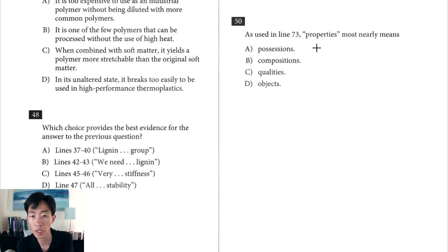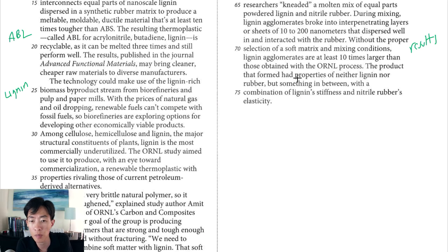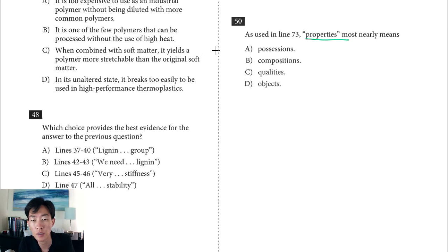Question 50, as used in line 73, properties most nearly means. It says the product that formed had properties of neither lignin nor rubber, but something in between. So what do they mean by the use of properties? They're obviously talking about the material itself, so I would guess characteristics or traits, and we need a word that means something similar to that. Keep in mind the sentence is saying the product itself had certain properties. Did it have possessions? No, that would be like houses and stuff. That's not what they mean by property here. Did the product have compositions? This word is kind of off. Composition does have to do with like the ingredients of something or the makeup of something. That's really talking about sort of like the constituent parts, like what properties or what things make up that material. So B, not likely going to be the answer. C, what qualities? Yeah, so qualities is probably the closest to the words that we guessed, which were characteristics or traits. Then choice D, to say that the product form had objects. Neither like lignin. Also doesn't make any sense. So the best choice is C.